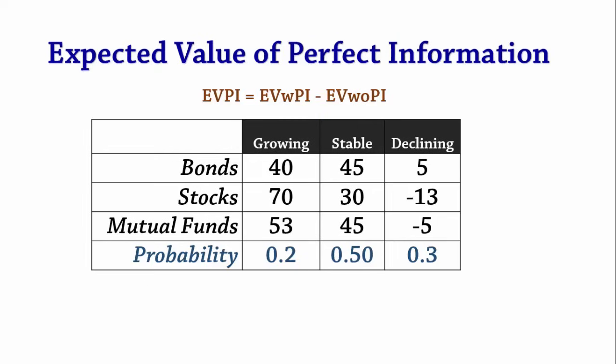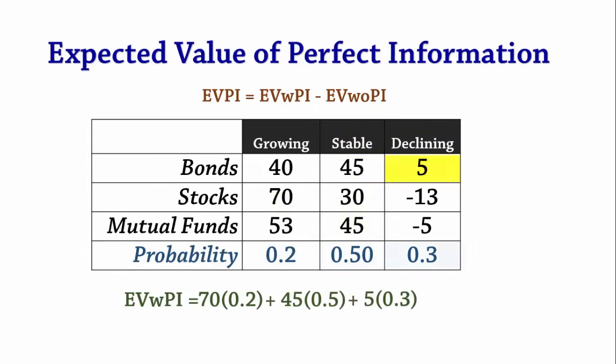So EVwithPI is 70 times 0.2, plus 45 times 0.5, plus 5 times 0.3, which equals 38.